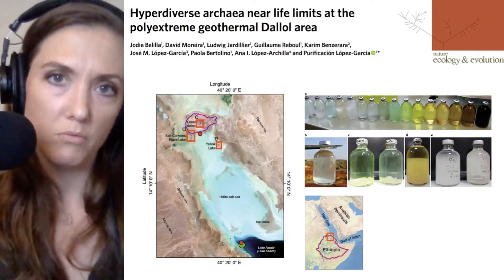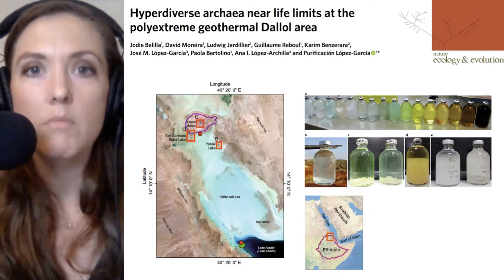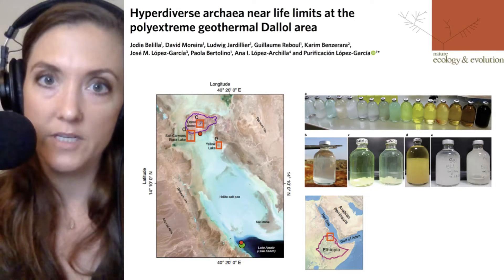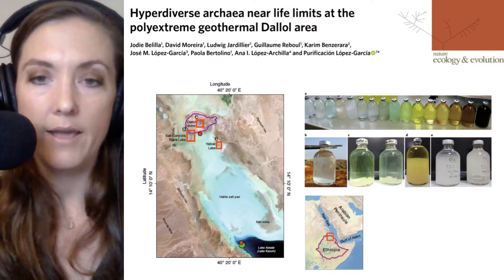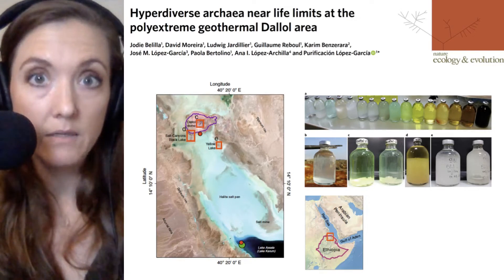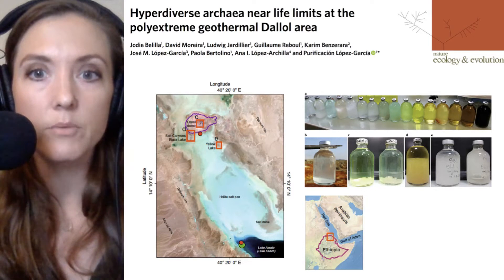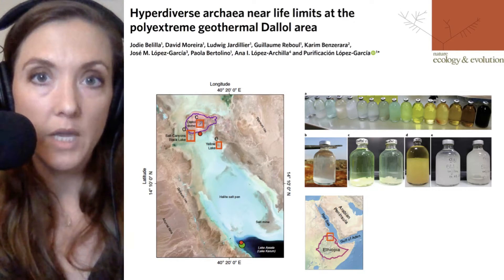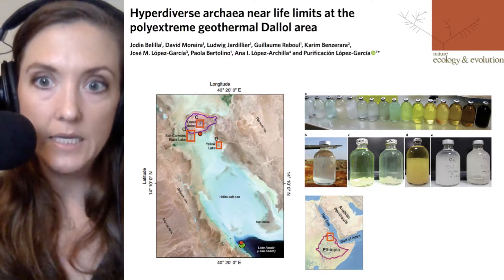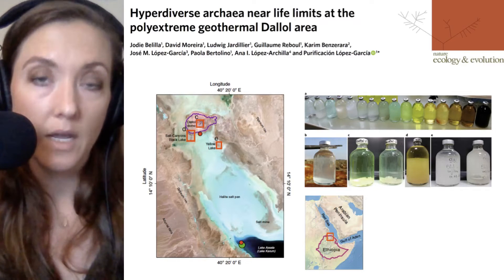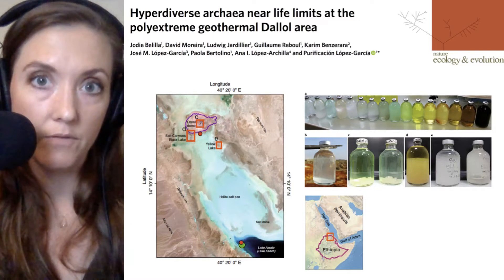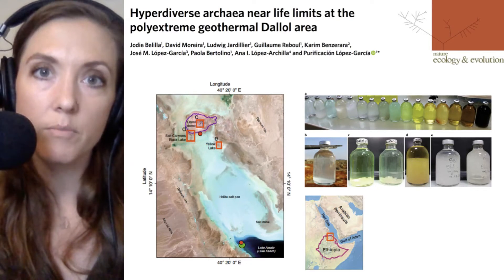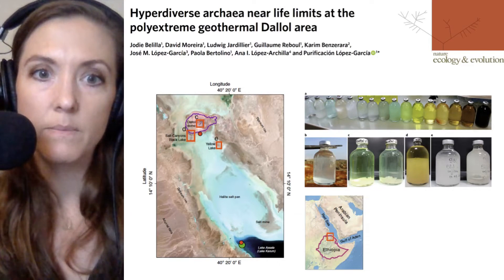When I say poly-extreme, I mean that it's extreme in multiple different types of conditions. It can have very high heat, which is often extreme for microbes. It can have very low pH or high acidity, and it can also have high salt concentrations of different types of salts. All of those can be found in various combinations.